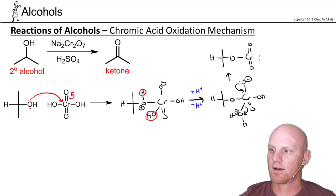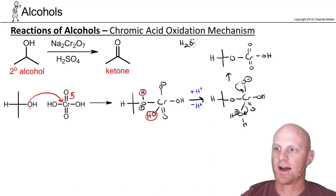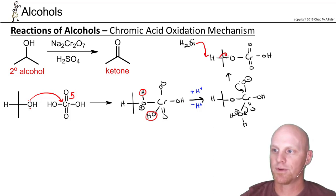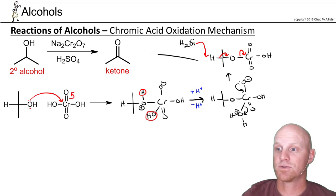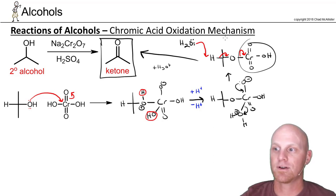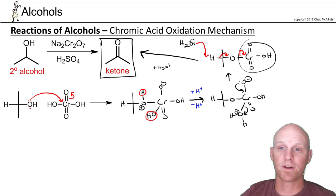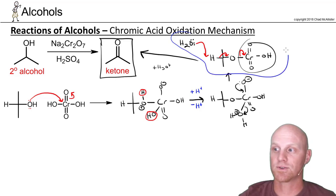Now these electrons come back down and kick off the water, which is now a good leaving group, forming what's called a chromate ester. A water molecule from solution comes in and acts as a base, pulling that hydrogen off and deprotonating it. That frees up the electrons to form a double bond to oxygen, and the bond breaks as the electrons go to the chromium — giving you your ketone. You also form an H₃O⁺ molecule and a reduced chromium species. This last step is very analogous to E2 elimination: you deprotonate from the beta carbon and kick off a leaving group all in the same step — a concerted mechanism. This is the especially tricky step that students struggle with.